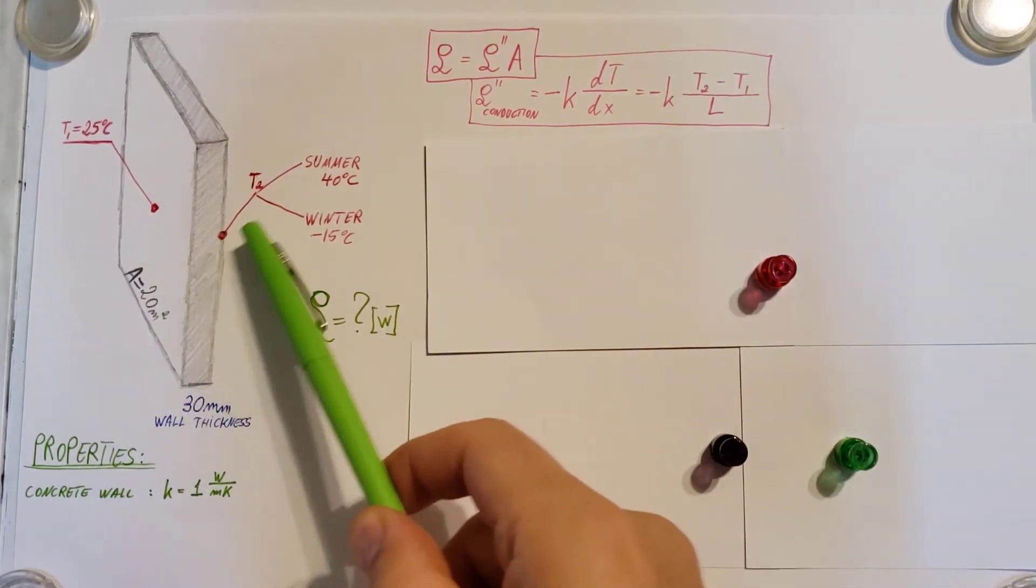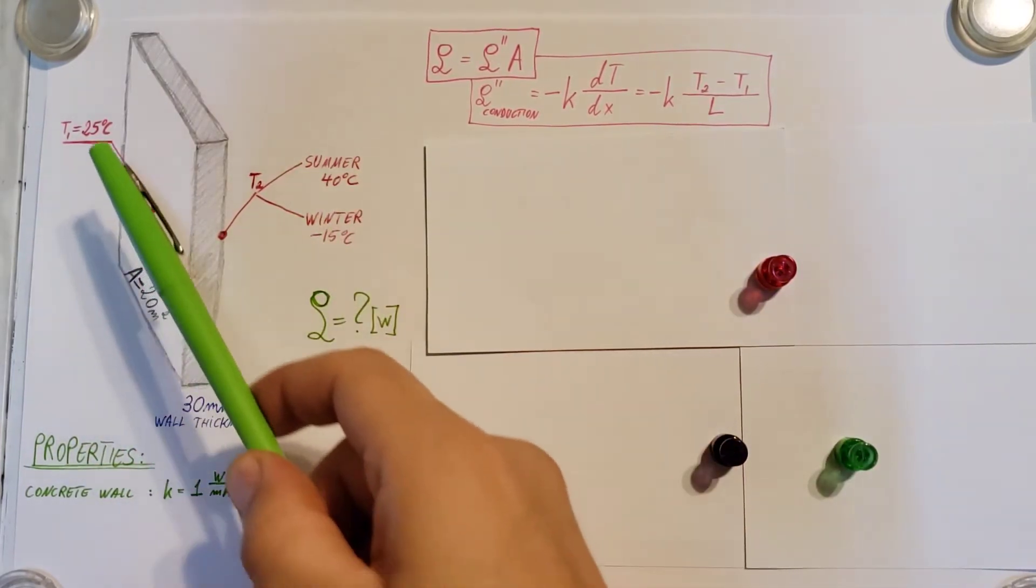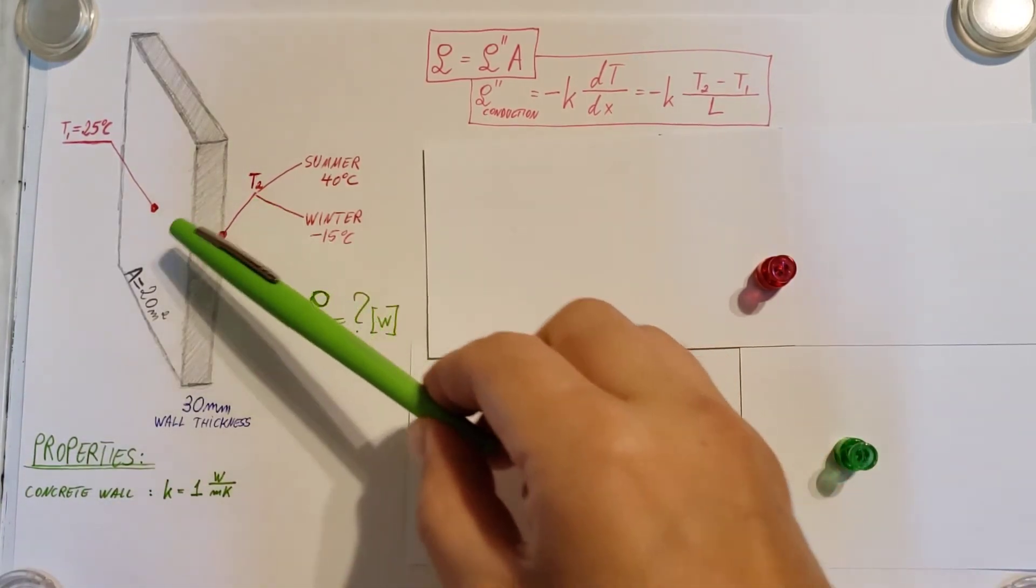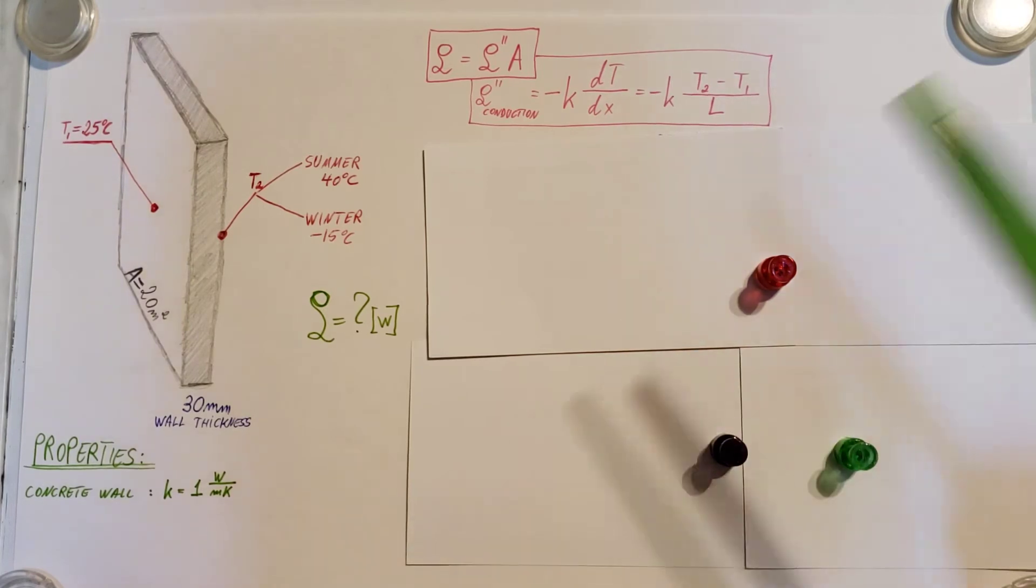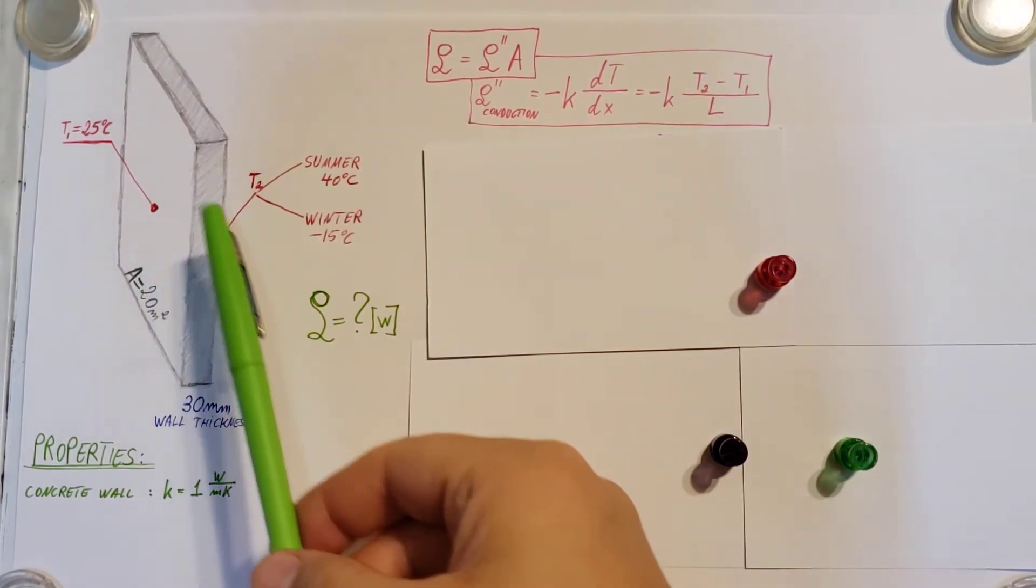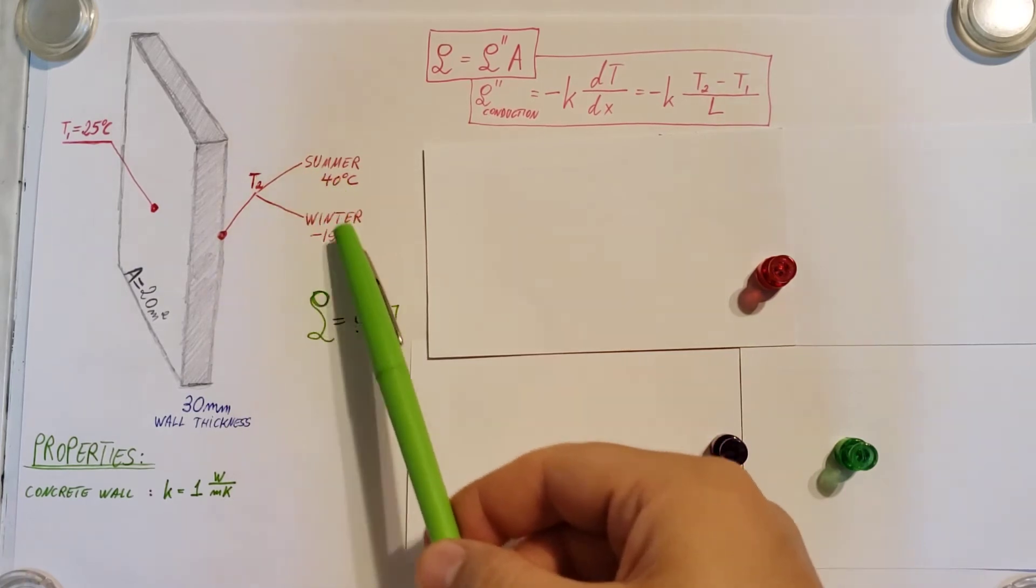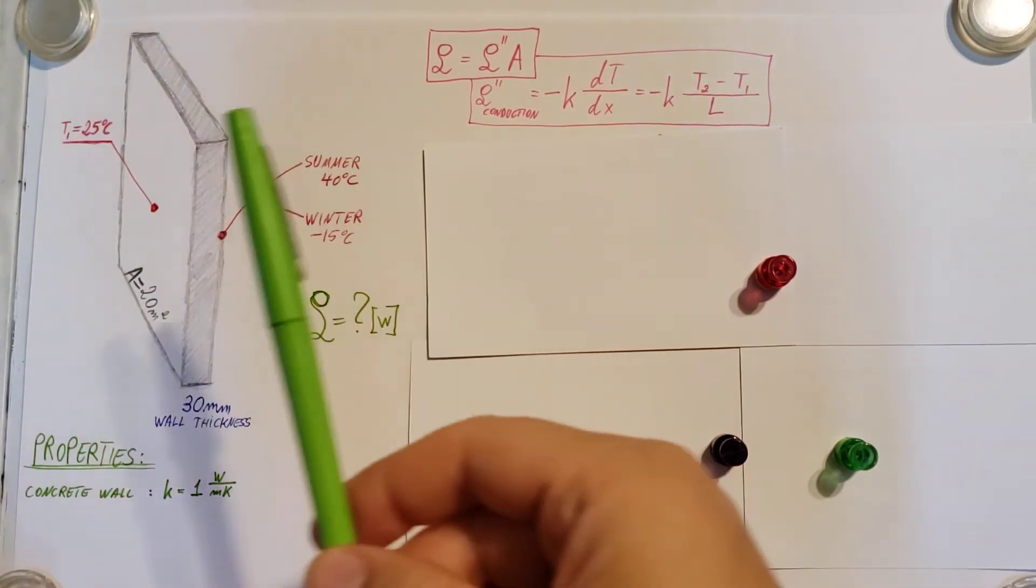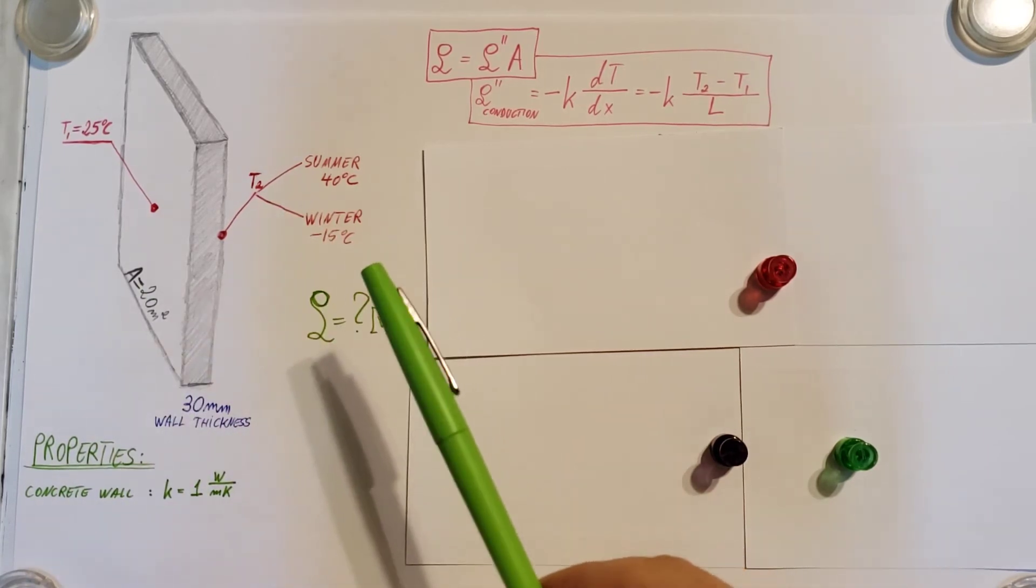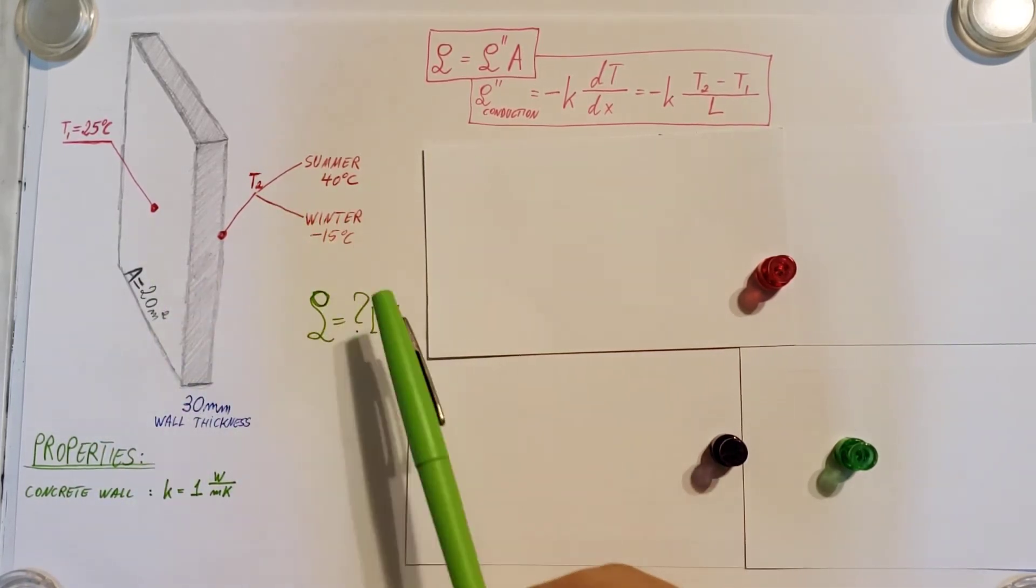Our T2 is on this side. And T1 is going to be on this side. Now you can do it the other way too. You're going to have to know what situation you're dealing with. Which direction is your heat transferring.